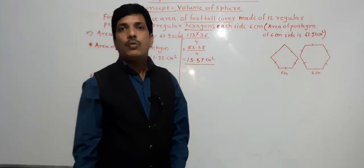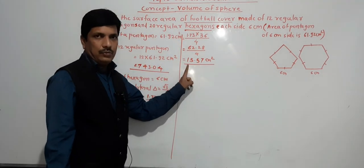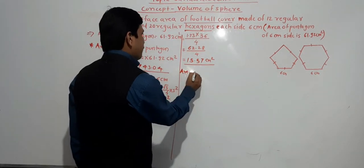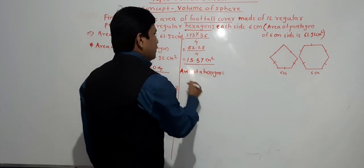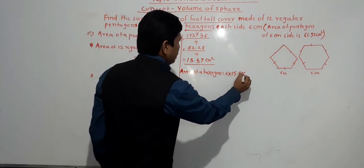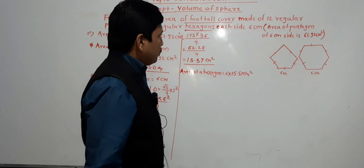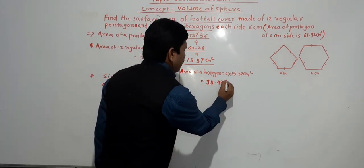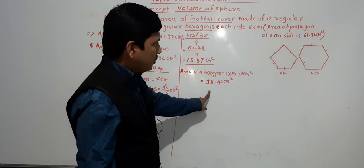A hexagon can be divided into 6 equilateral triangles, so we multiply by 6. Area of one hexagon equals 6 multiplied by 15.57 cm square, which gives 93.42 cm square. This is the area of one hexagon.